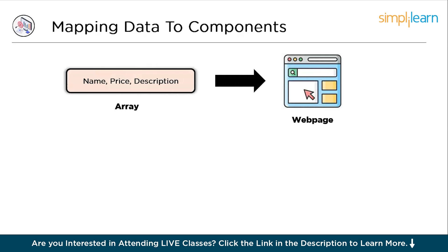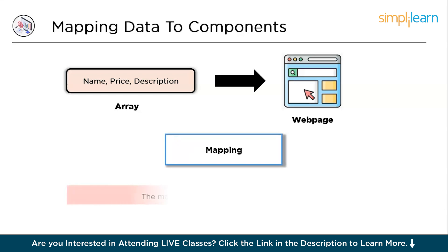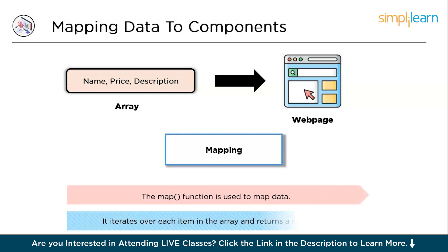Let's say we have an array of products, each represented by an object containing information like name, price, and description, and we want to display these products on a web page as visual cards. This is where mapping data to components comes in handy.